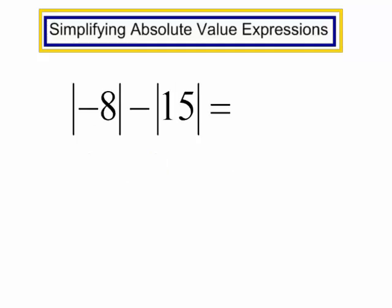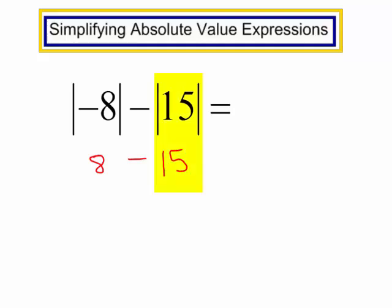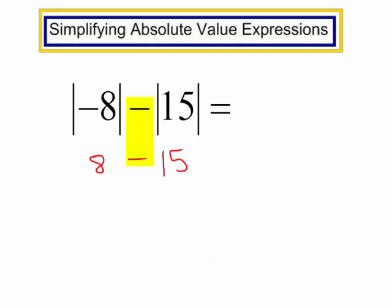The absolute value of negative 8 minus the absolute value of 15. The absolute value of negative 8 is 8. Bring down that minus sign. The absolute value of 15 is 15. Be careful here — it is correct that the absolute value of 15 is 15. The reason we have a negative in front of it is because we brought down the minus sign. So 8 minus 15 is negative 7.